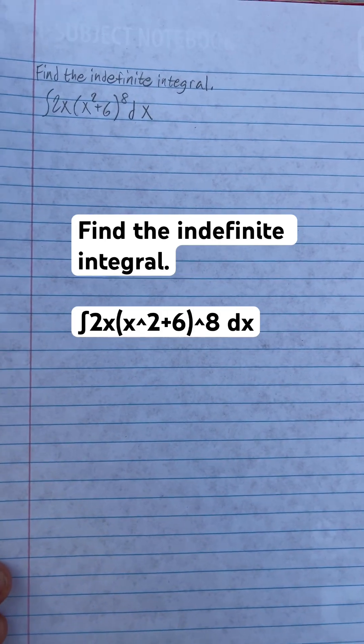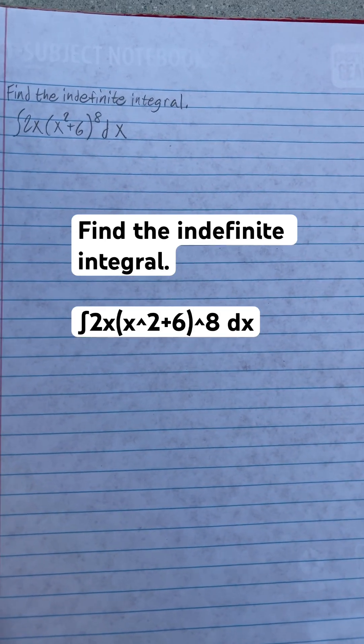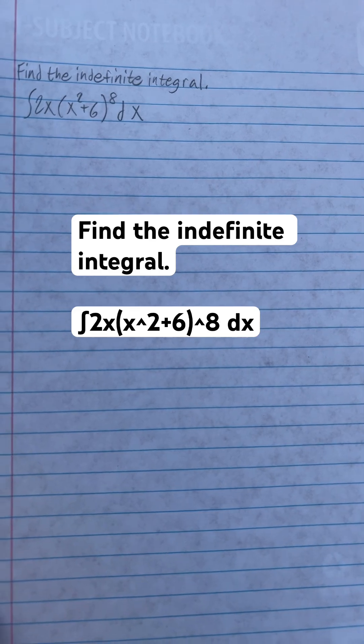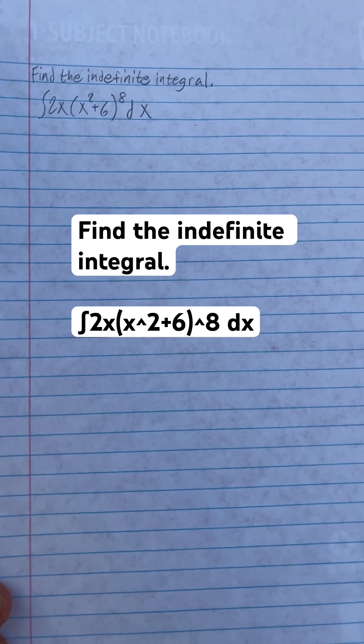Find the indefinite integral. So we got the integral 2x times x squared plus 6 to the power of 8 dx. Now this is how we solve this.